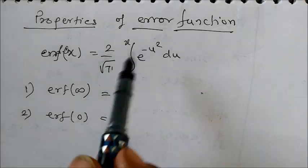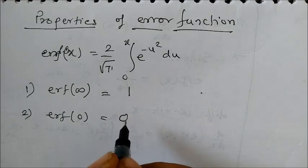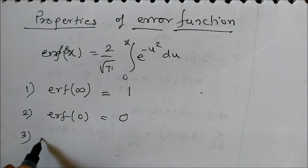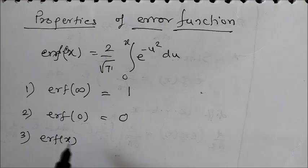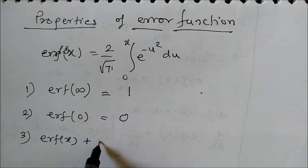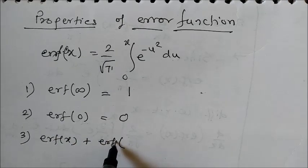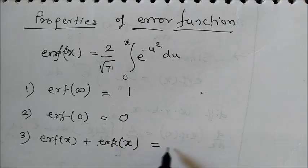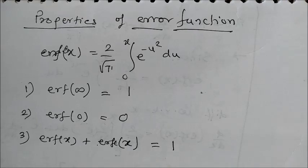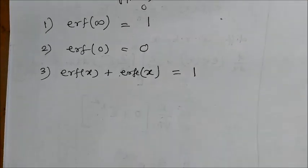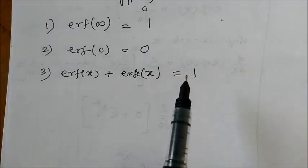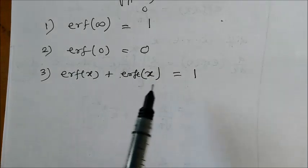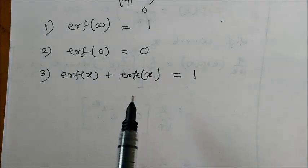Third, suppose if I take erf of x and if I add erf of complementary function of x, so erfc of x, this is going to be 1 always. And that's why it is used in probability, the probability is always 1. So we can have a probability distribution in this fashion.